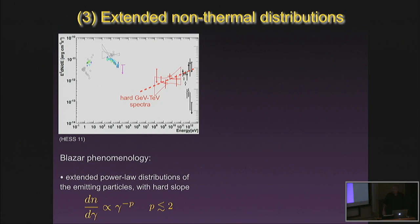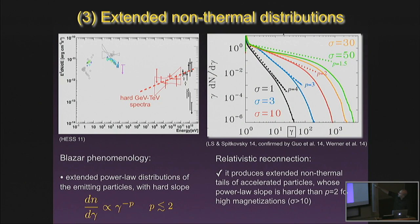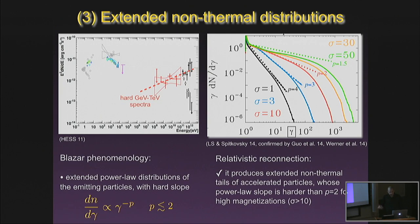By investigating the shape of the particle spectrum as a function of magnetization from sigma 1 up to sigma 50, it is always clear that it is a power law, and the index depends on magnetization. For magnetization larger than 10 you can have a hard slope harder than two — consistent with observations. All three properties listed at the beginning are realized by reconnection. In some sense this is a new working model for blazar emission. The consequences are still to be fully explored, but the zeroth-order comparison with the basic properties of observations is very encouraging.